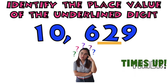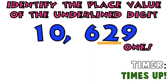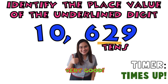Time's up! Let's see if your answer is correct. Digit 9 is ones. How about digit 2? Very good, tens.